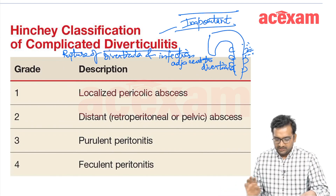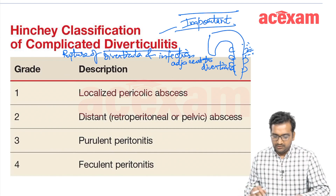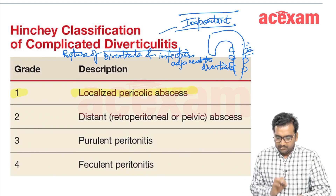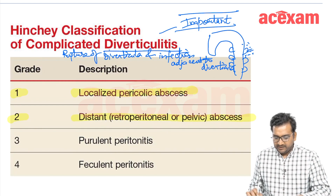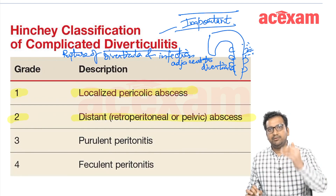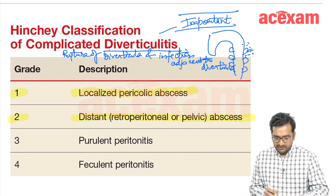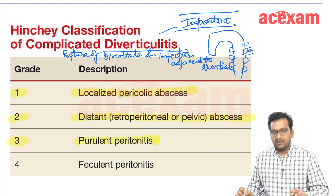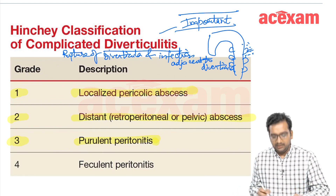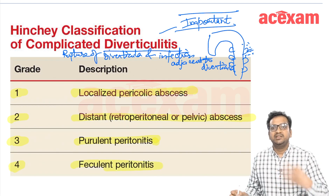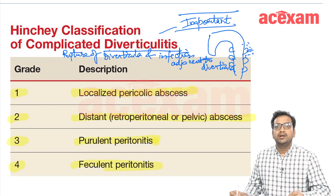If there is feculent peritonitis, that is Type 4. This is very important from an MCQ point of view, as many questions are being asked. To summarize: Grade 1 is localized pericolic abscess; Grade 2 is a distant but still localized abscess, either in the retroperitoneum or pelvis; Grade 3 is generalized purulent peritonitis; and Grade 4 is generalized feculent peritonitis.